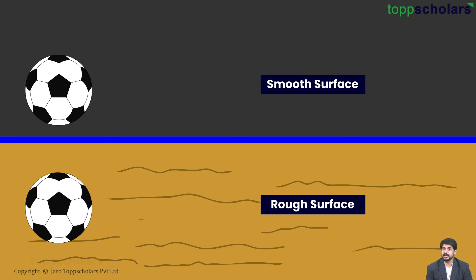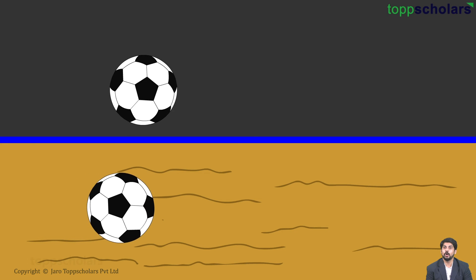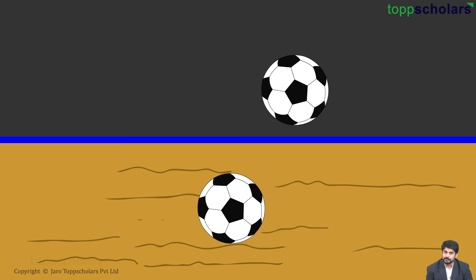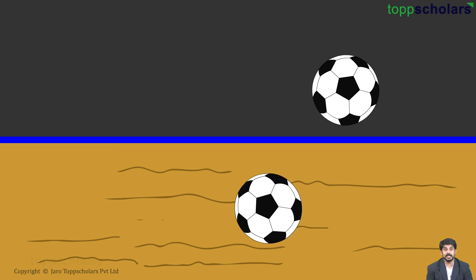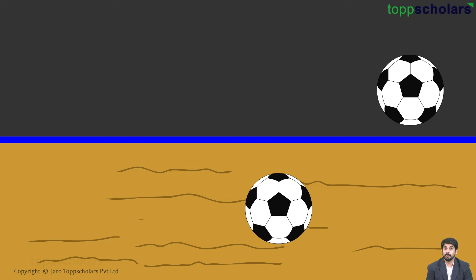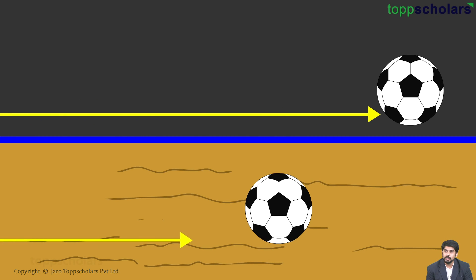As you can see, both the balls start rolling on different surfaces with the same speed, same force and at the same time. But the ball that is rolling on the smooth surface travels a larger distance than the ball rolling on the rough surface.